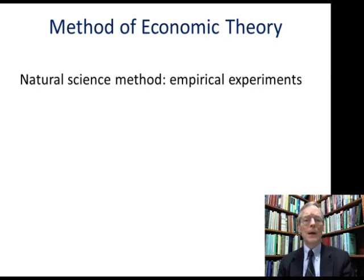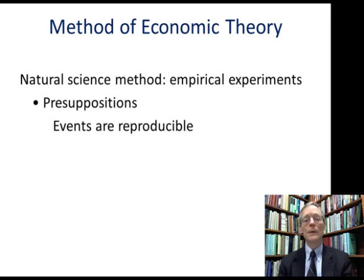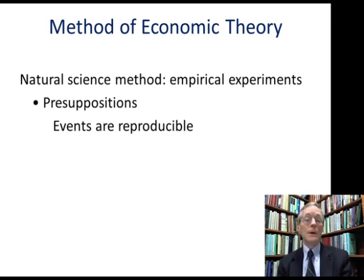Now let's think about what presuppositions must be held for the natural science method to make sense. The first presupposition is that the events themselves are reproducible — that when the test is replicated by another scholar, such as someone dropping different-massed objects from the top of the Empire State Building or the Eiffel Tower, this constitutes a sufficient replication of the event to illustrate the natural law.